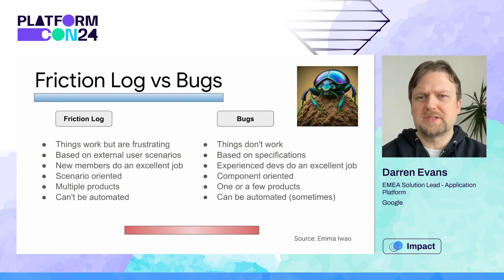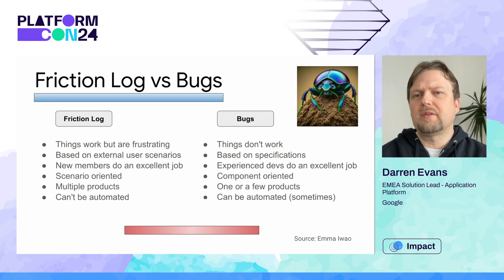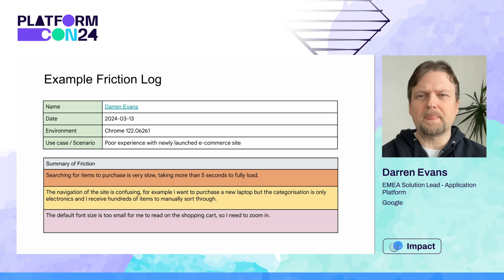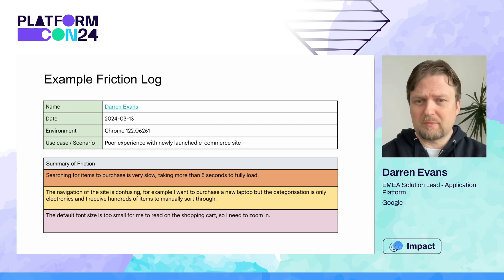Frictions are where it's frustrating to use a service or feature, however it still works. A bug is where things don't work. New team members are an excellent resource to log in the friction log because they are using services for the very first time. Experienced developers are better suited to filling out detailed bug reports. A friction log is a tool to capture end-to-end experience throughout the developer journey — it's a feedback loop. If a feedback loop is not in place, a firm won't use friction logs. Getting this input is essential for platform engineering to work well.